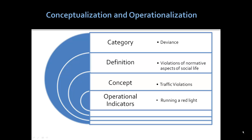This slide should look familiar from the Grounded Research Lecture. Here we look at the category called deviance, defined as a violation of normative aspects of social life, or simply breaking the rules. The concept — the lower-level abstraction derived from observations — might be traffic violations, a specific form of rule breaking. An operational indicator of a traffic violation might be running a red light.